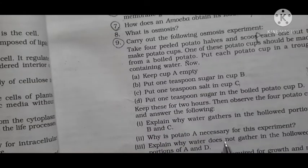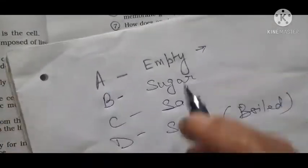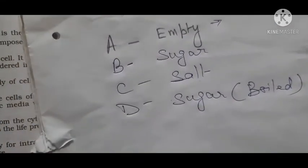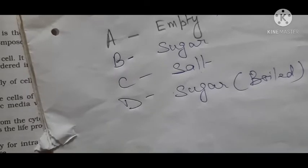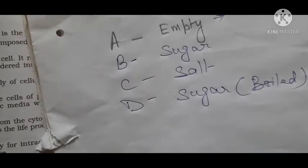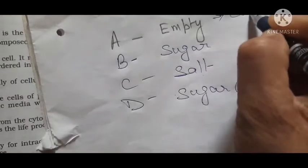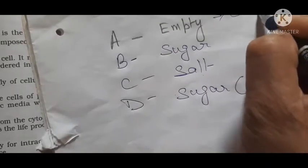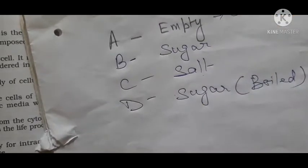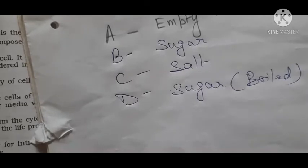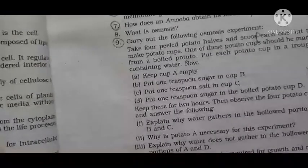Why is potato A necessary for this experiment? It is kept as a reference. It is a control. It is kept as a control, just as a reference experiment.